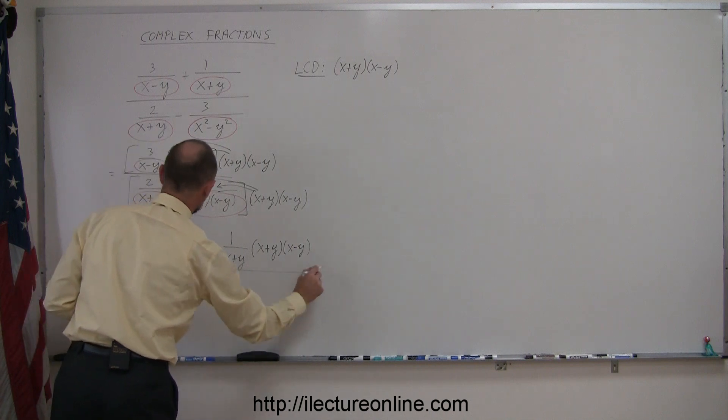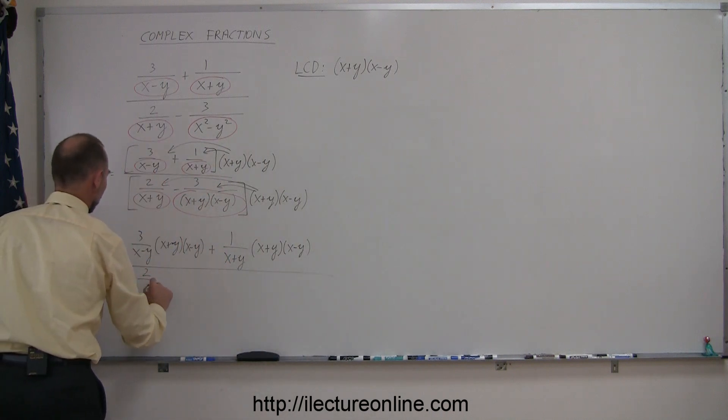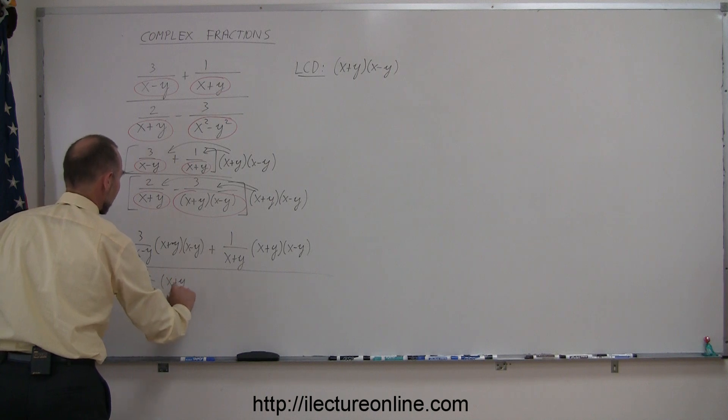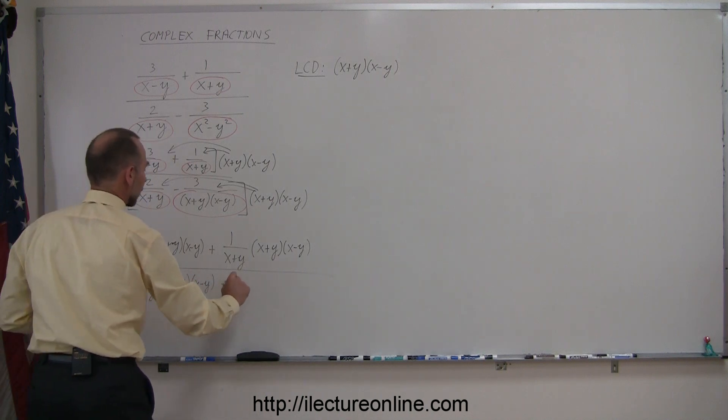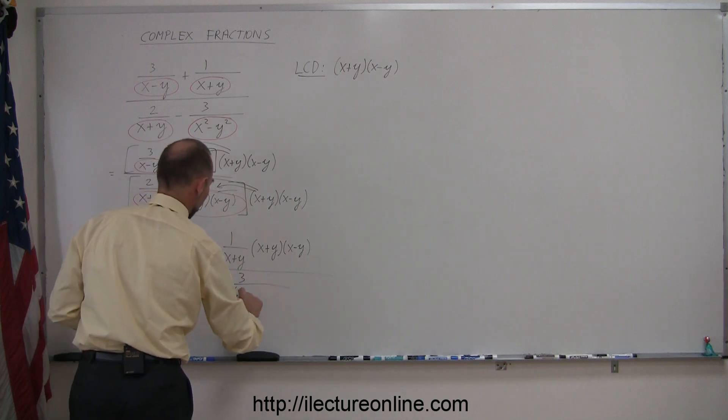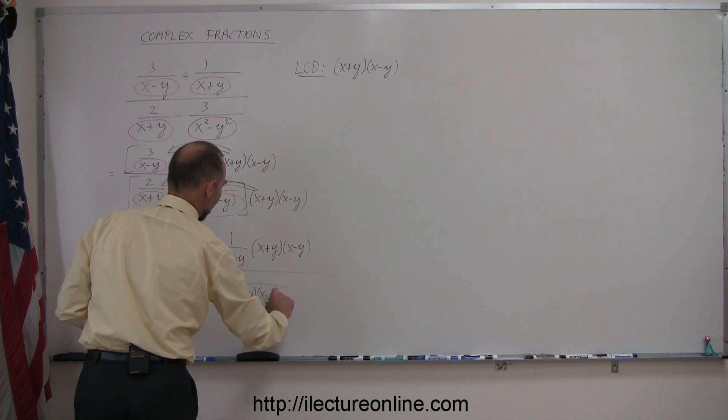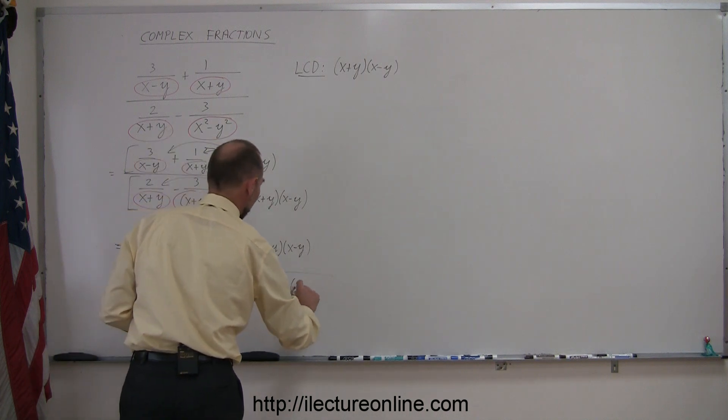The whole thing divided by 2 over x plus y, times x minus y, minus 3 over x plus y, times x minus y, and the whole thing then, multiply times x plus y, times x minus y.